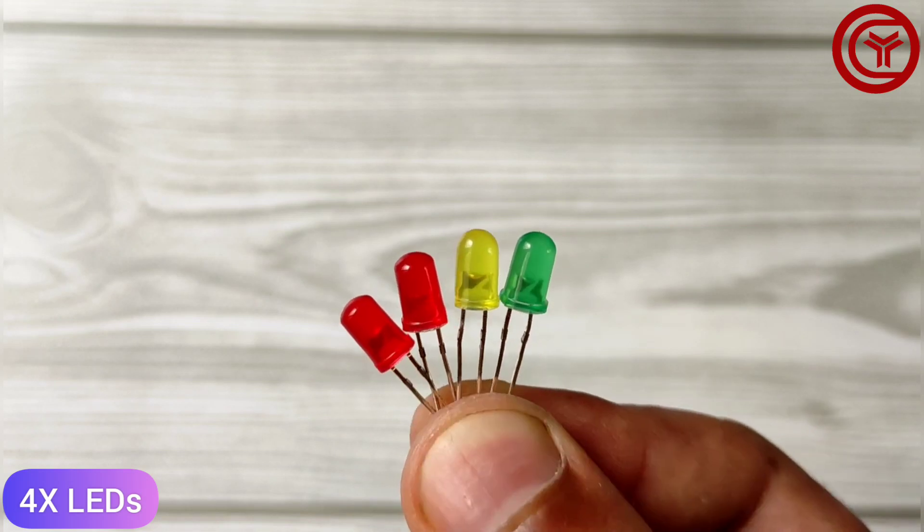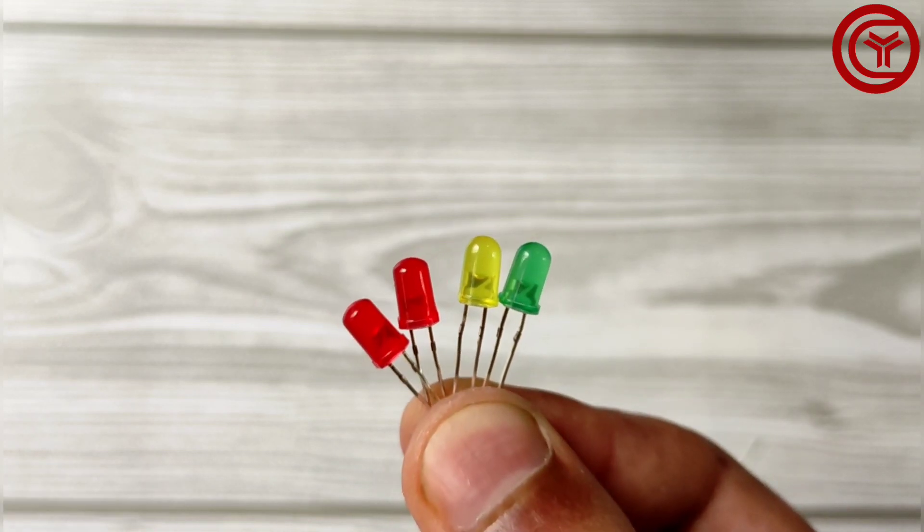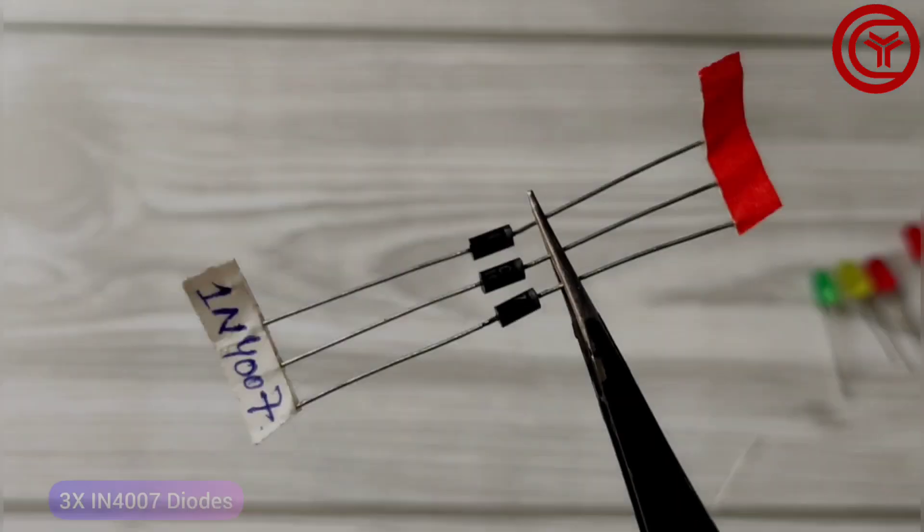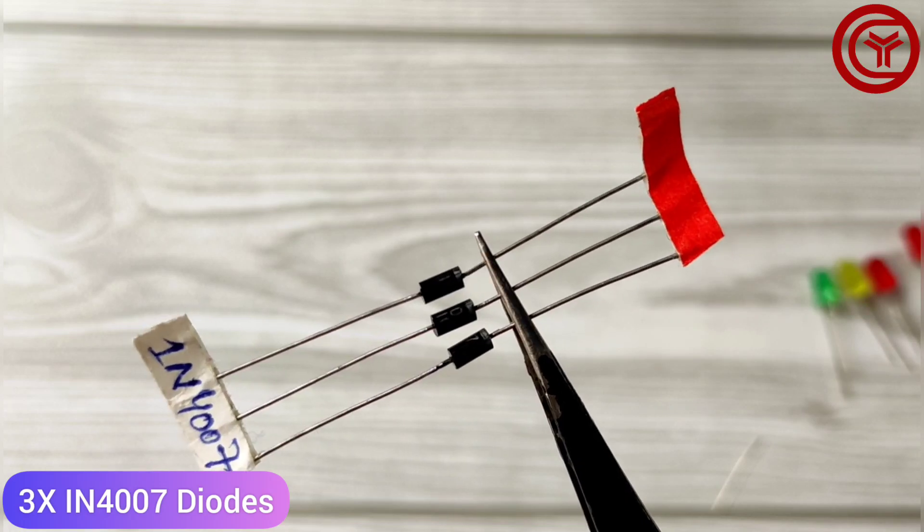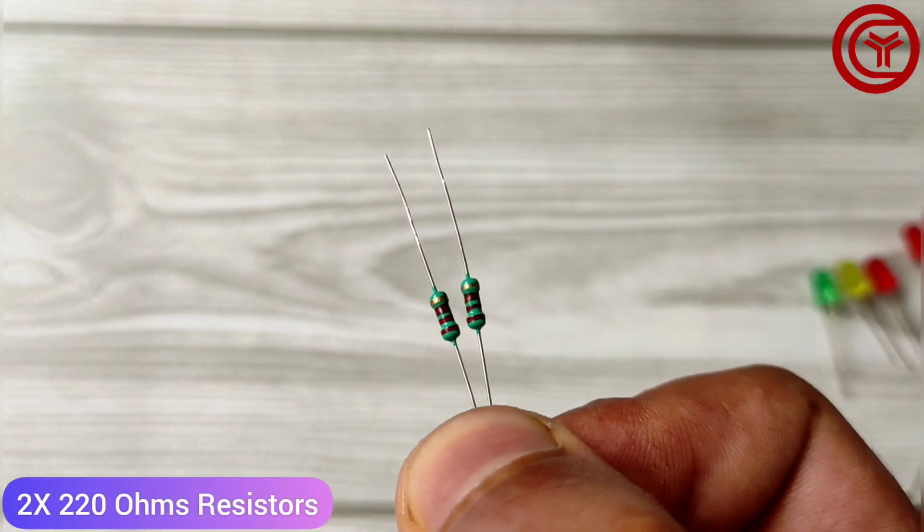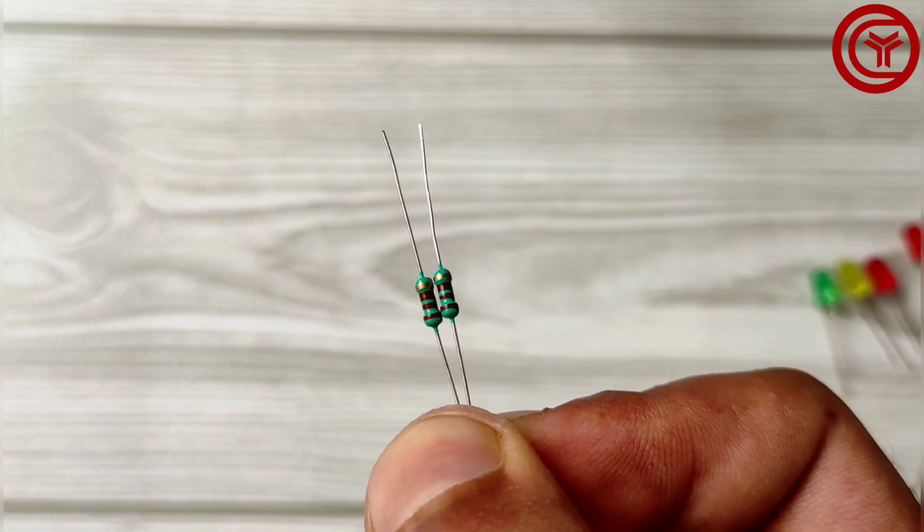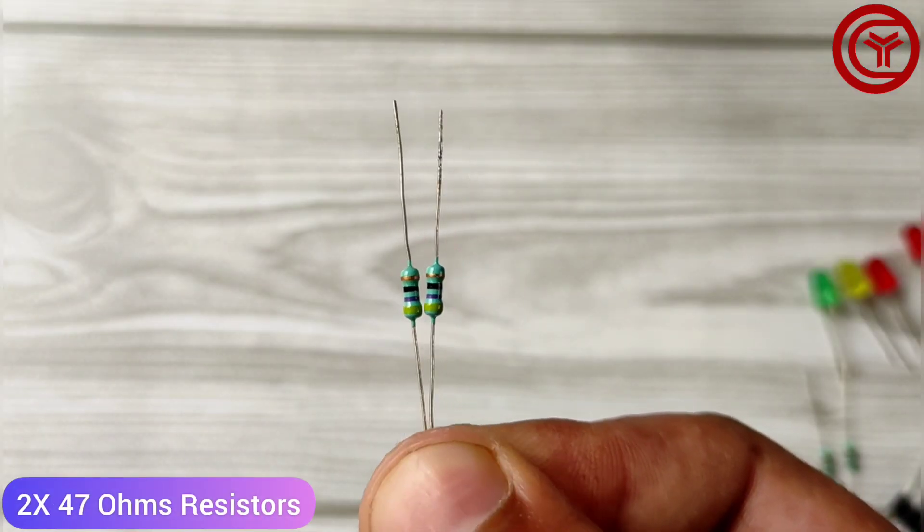For that we need LEDs, one and four double 07 diodes, 220 ohm resistors, and 47 ohm resistors.